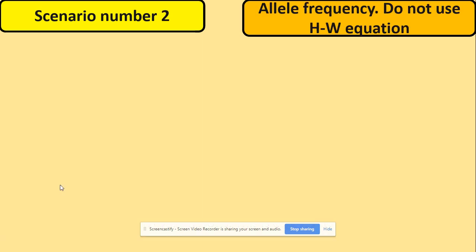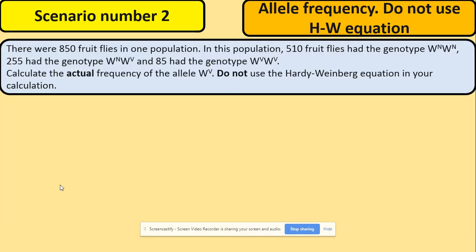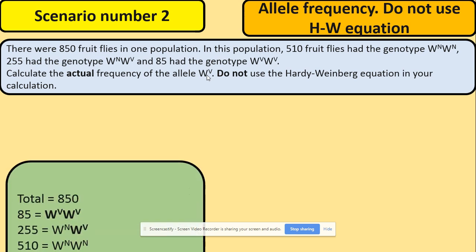Let's have a look at scenario number two. Really common when they ask you to work out the allele frequency without using the Hardy-Weinberg equation. So this is the question: there were 850 fruit flies in one population. In this population 510 fruit flies had the genotype W^N W^N, 255 had heterozygous genotype W^N W^V, and 85 had genotype W^V W^V. And you need to work out the frequency of W^V allele without using the equation.